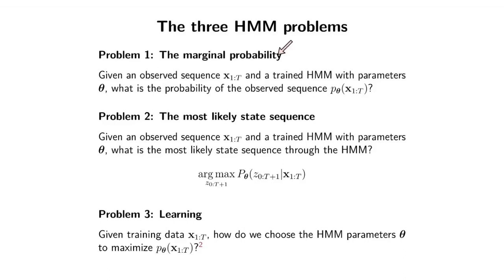The first one is the marginal probability. I observe some sequence x1 to t and I want to know what is the probability of that sequence given my current hidden Markov model. That hidden Markov model has parameters theta—that's the a and the phi combined.